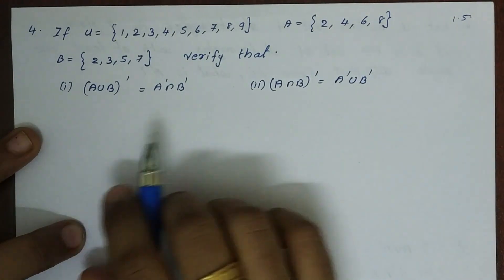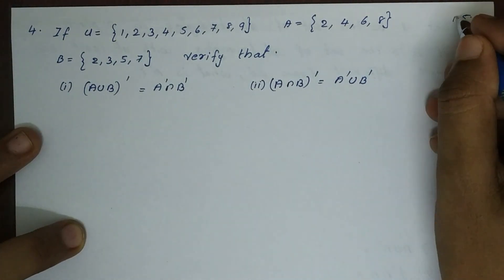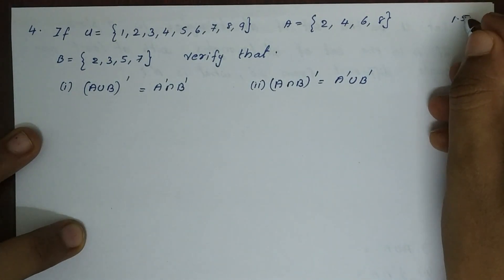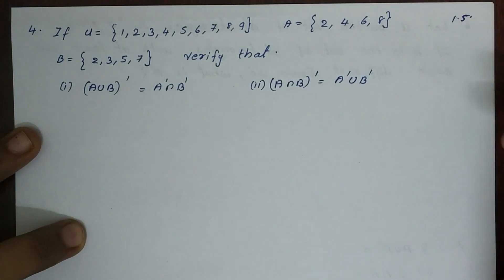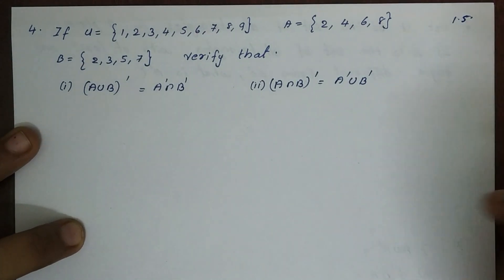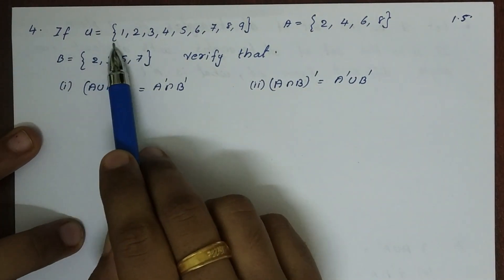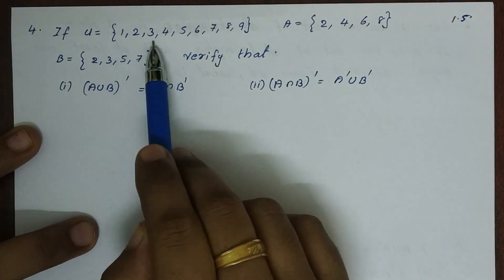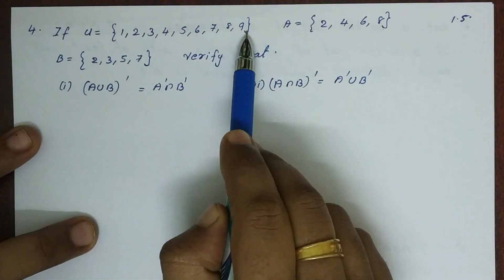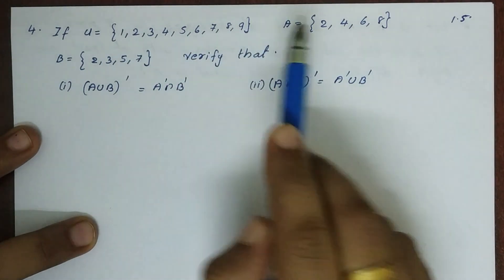Hi everyone, this is my exercise 1.5 in the 3rd problem. If U is equal to 1, 2, 3, up to 9,